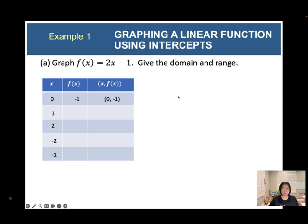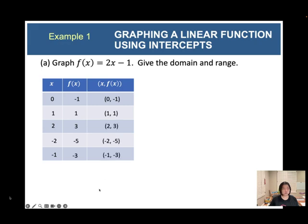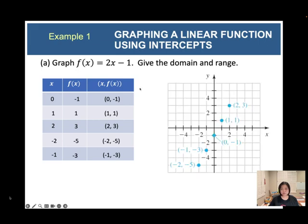Try plugging in other values for x, find f(x), and write down the ordered pairs. You should get (1, 1) and (2, 3). Check: 2 times 2 equals 4, and 4 minus 1 equals 3. Now let's write down all five ordered pairs on graph paper and draw all five points connected with a straight line.